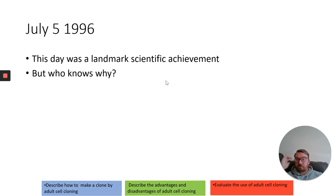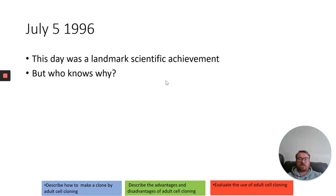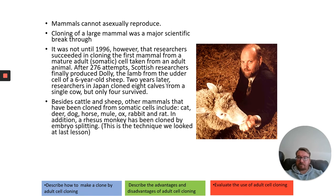July the 5th, 1996 was a landmark scientific achievement. It was the time that the first successful clone of a mammal was carried out. It took 276 attempts, and they managed to produce a sheep clone known as Dolly, made from the udder cell of a six-year-old sheep.